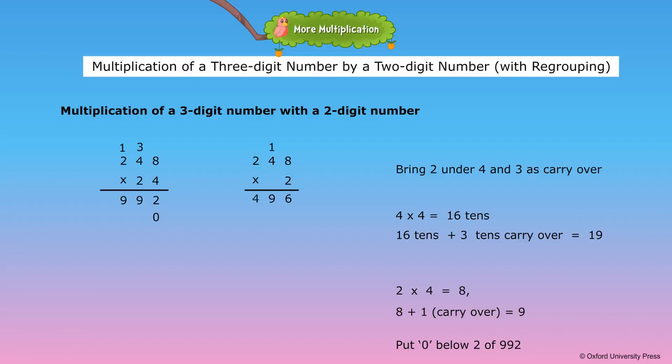Write four hundred and ninety-six before zero in the second row. So the second row number is four thousand nine hundred and sixty.